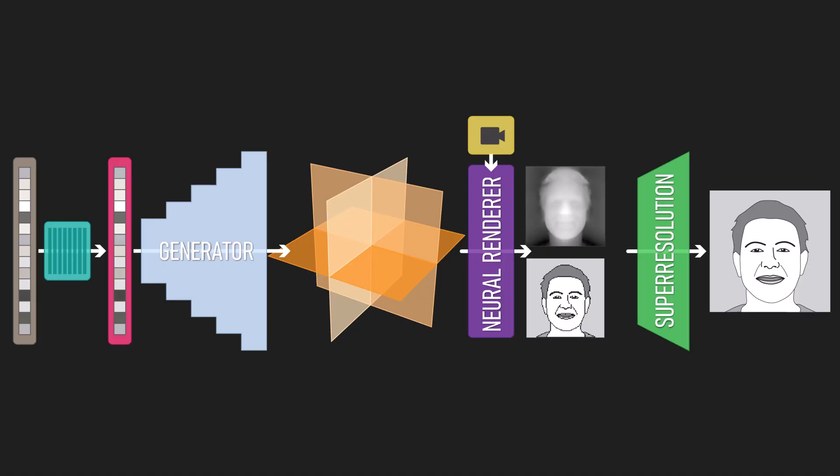Our work builds on EG3D, which is a recently proposed architecture for learning spatial information from 2D images. EG3D consists of a StyleGAN2 backbone, which outputs a tri-plane representation.